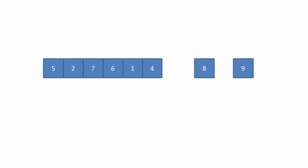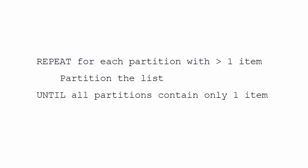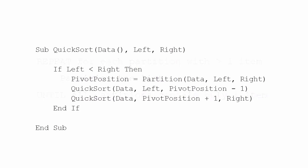Once you know how to partition a list, writing a quicksort program is a matter of repeating the process for each partition that contains more than one item. Here's some pseudocode for a quicksort program. Before dissecting it, let's visualise the order of operations.